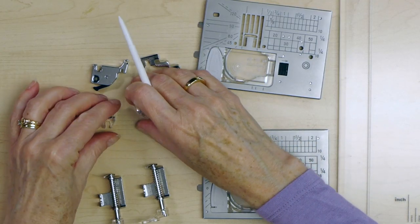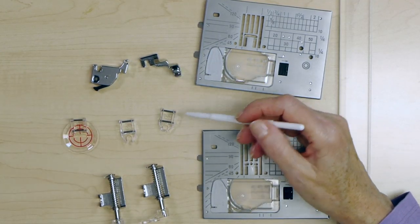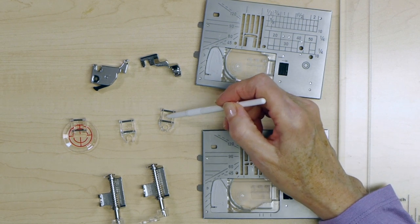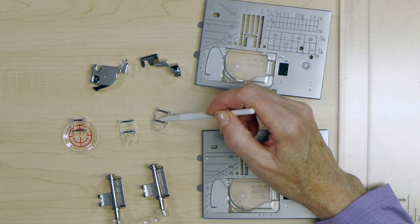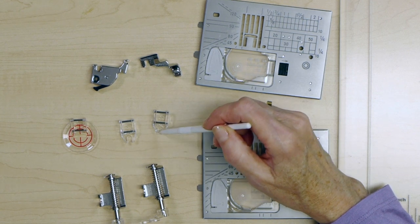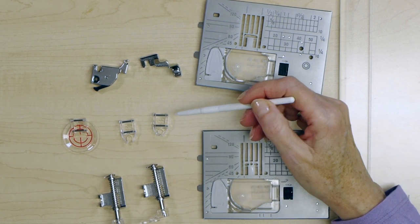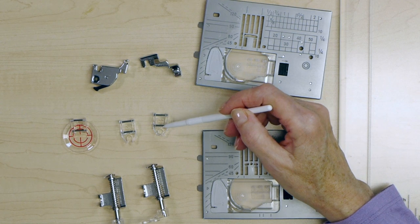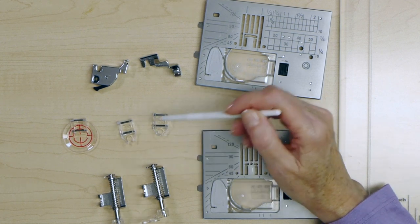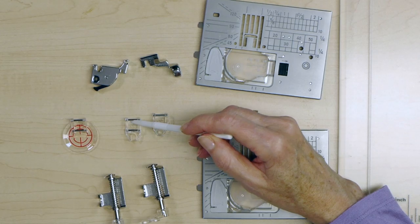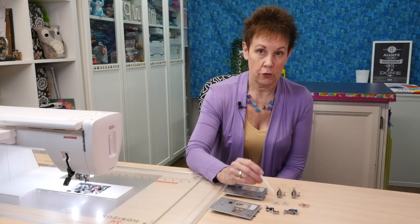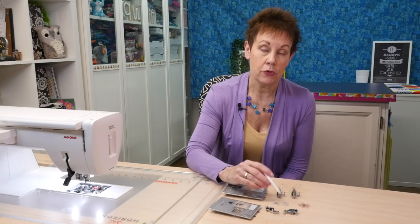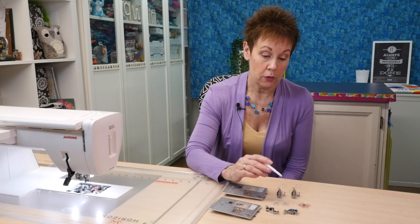There are also these other little tiny feet here that come with it, and these two feet are a Q open and a Q closed, like a QC and a QO foot. Basically they're free motion quilting feet and again they're very similar. The only difference is that this one is open and this one is closed. These ones, although they're small, work really well for free motion quilting too and I'm going to refer back to them once I get to show you the display screen on the sewing machine.